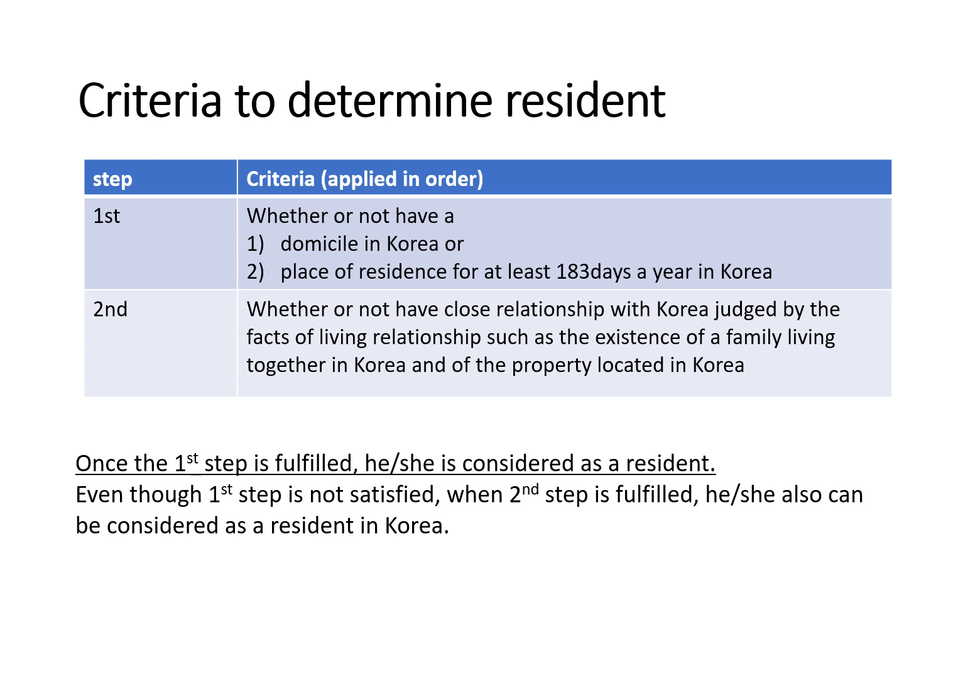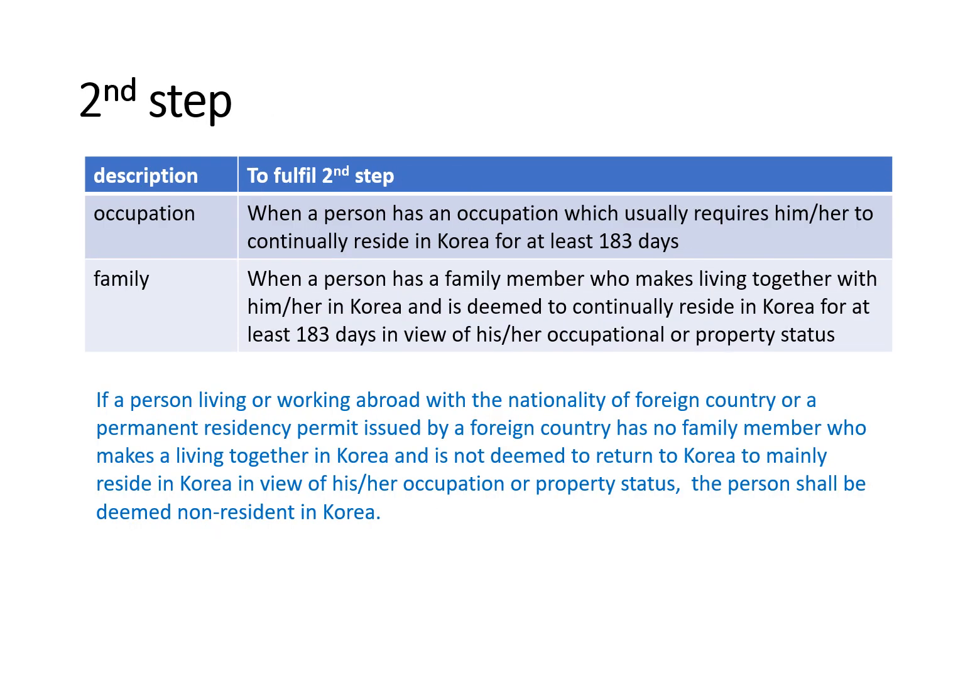There are two phases. If the first phase is fulfilled, the determination is finished — the person is a resident. If the second phase is fulfilled, the person can also be a resident. The second step involves occupation and family. For occupation, this applies when a person has an occupation which usually requires them to continually reside in Korea for at least 183 days. For family, it applies when a person has a family member who makes a living together with them in Korea and is deemed to continually reside in Korea for at least 183 days in view of their occupational or property status.